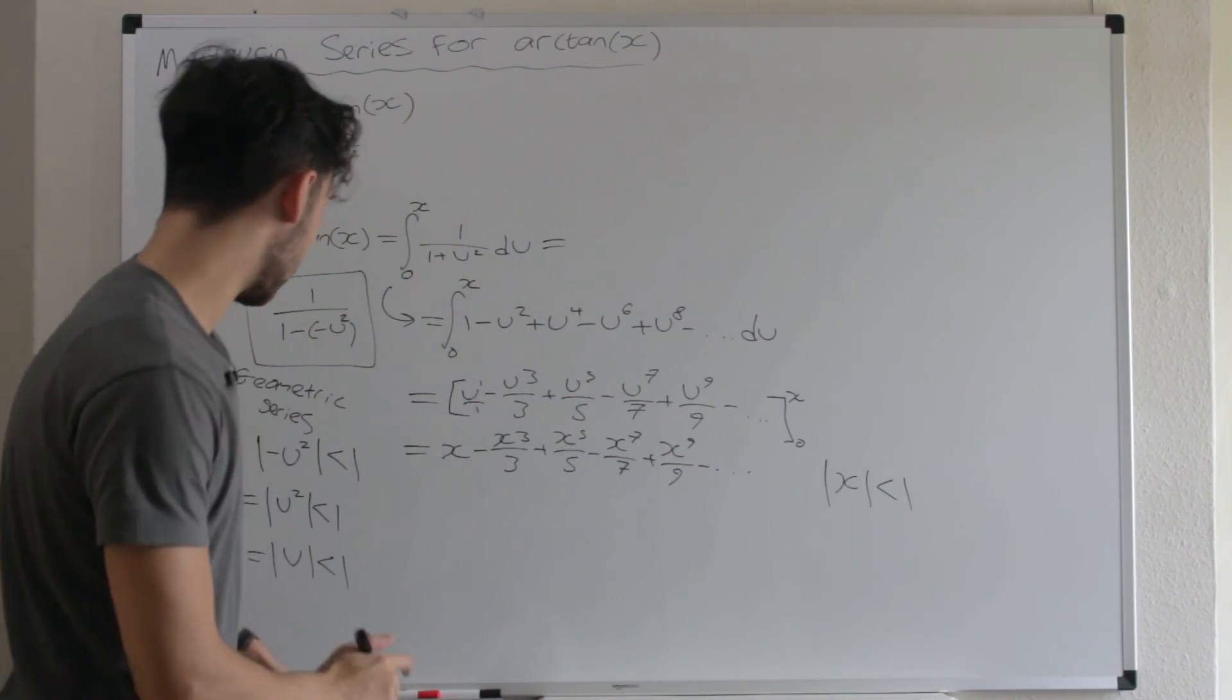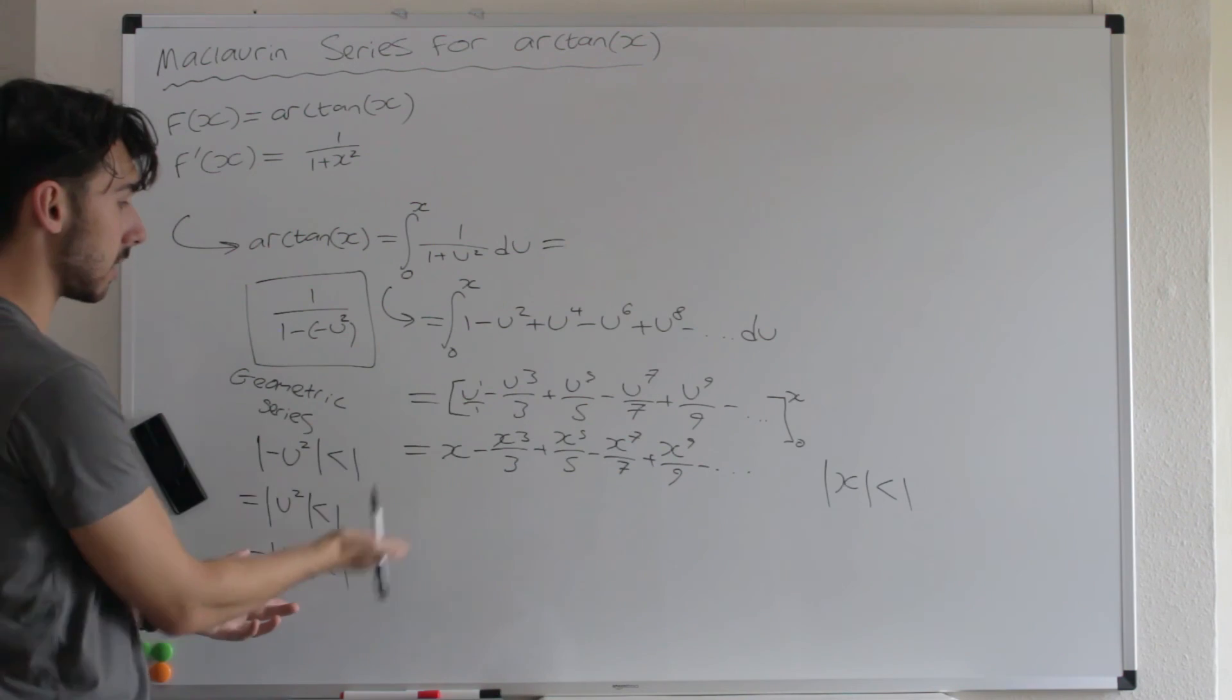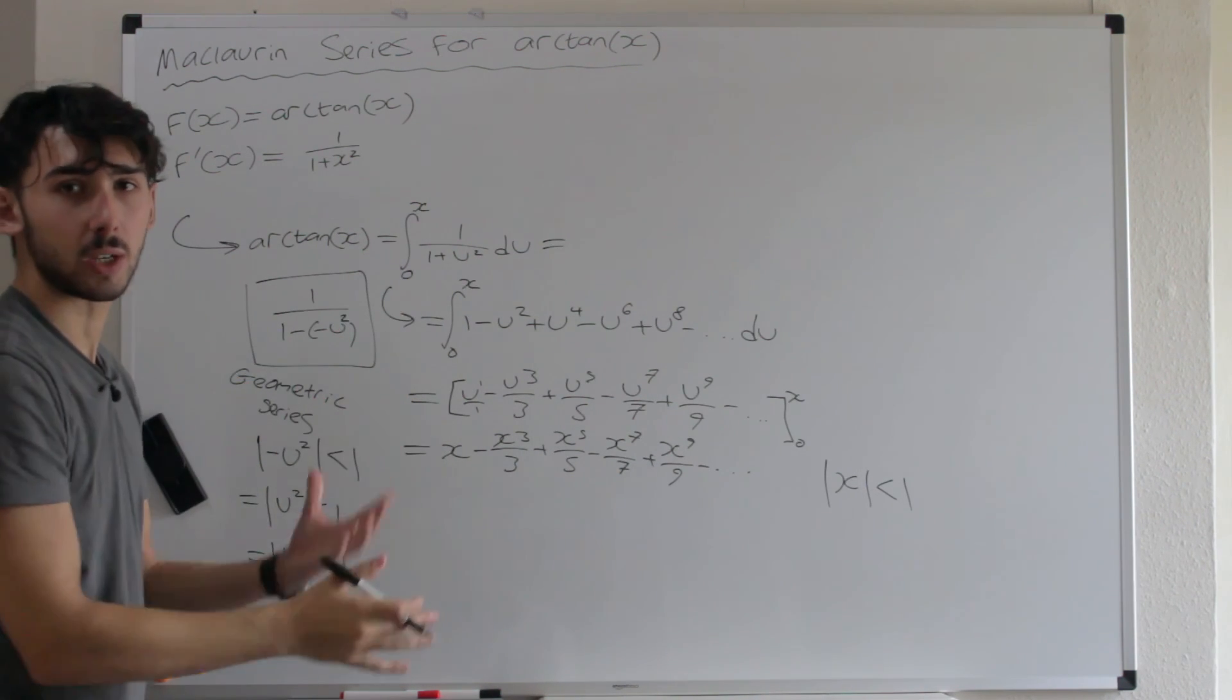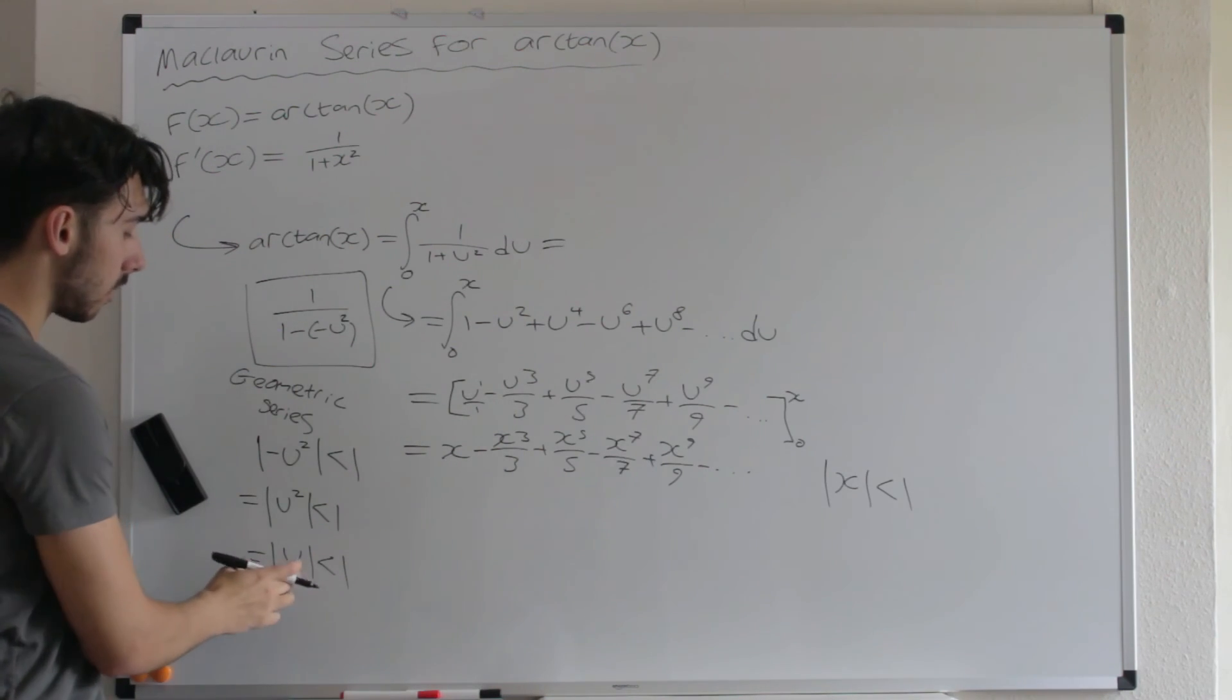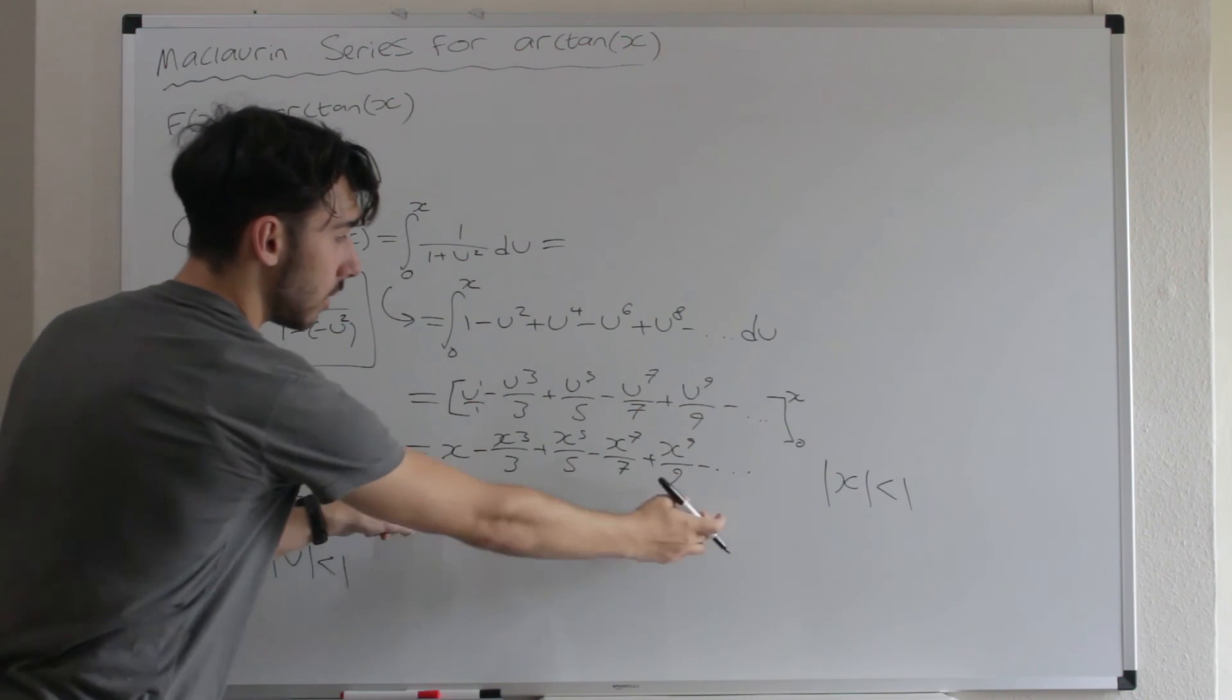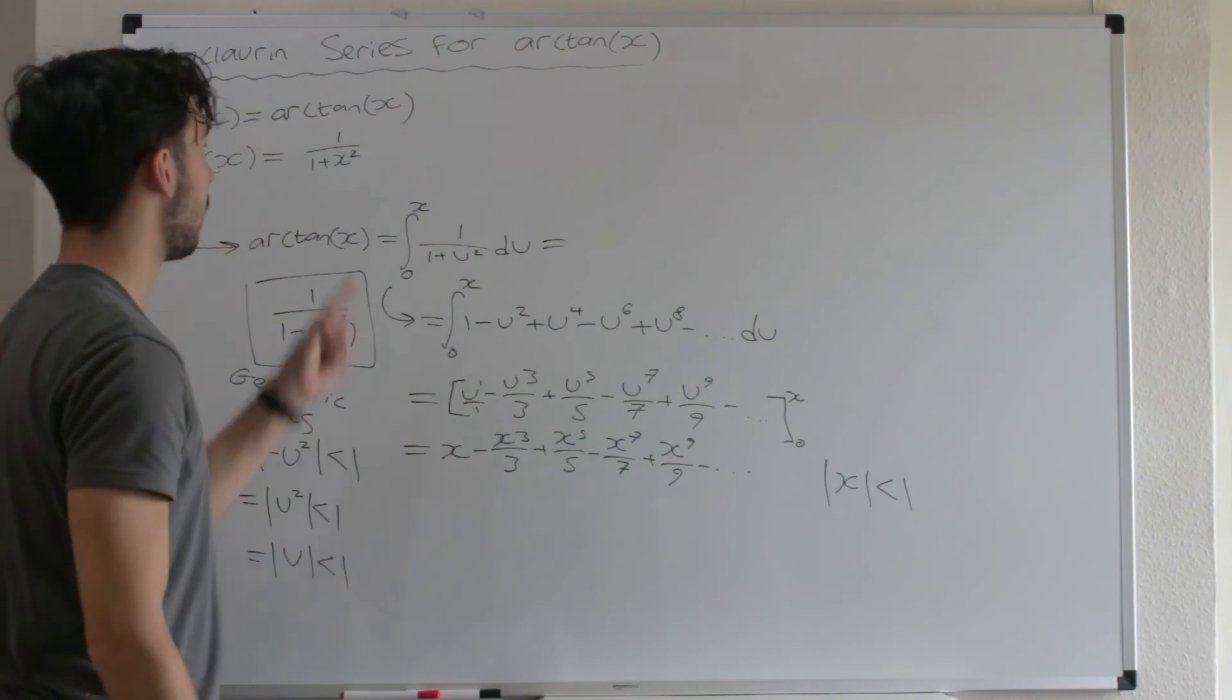The reason for that is just because of this. U and x are basically equivalent to each other. We just called it U because we didn't want to call it x, but they're the same thing. So as long as the modulus of U is less than 1, modulus of x is less than 1. Same thing. This is the Maclaurin series for arctan.